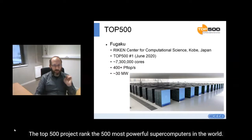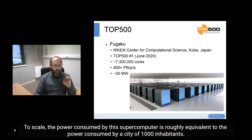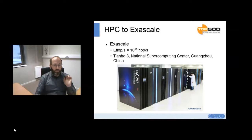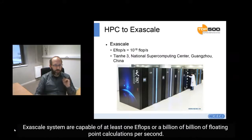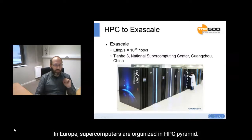The Top500 project ranks the 500 most powerful supercomputers in the world. Currently, the number one supercomputer is located in Kobe, Japan, and has a power of more than 400 petaflops. To scale, the power consumed by this supercomputer is roughly equivalent to the power consumed by a city of 100,000 inhabitants. But we need more powerful clusters. There are countries that compete to set up exascale systems, which are capable of at least one exaflop — a billion-billion floating-point calculations per second. Here is the prototype of the next Chinese exascale supercomputer, Sunway, to be deployed in Guangzhou.